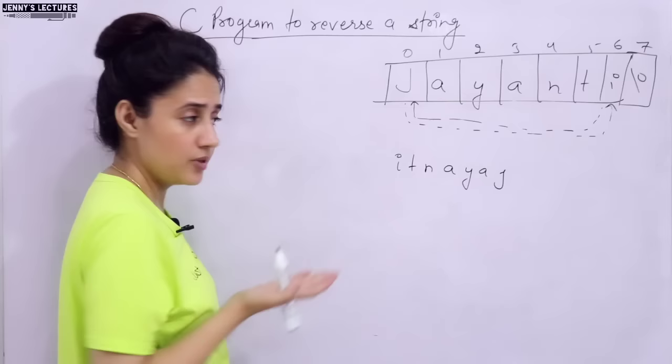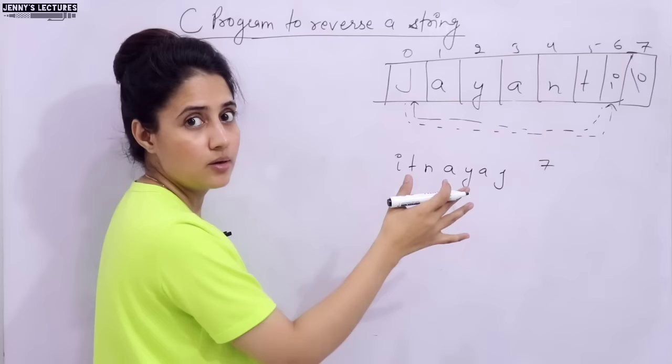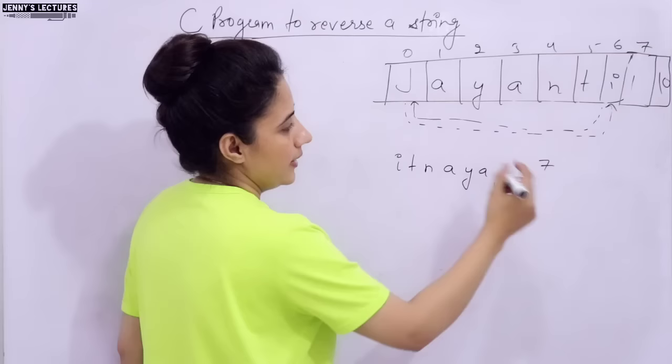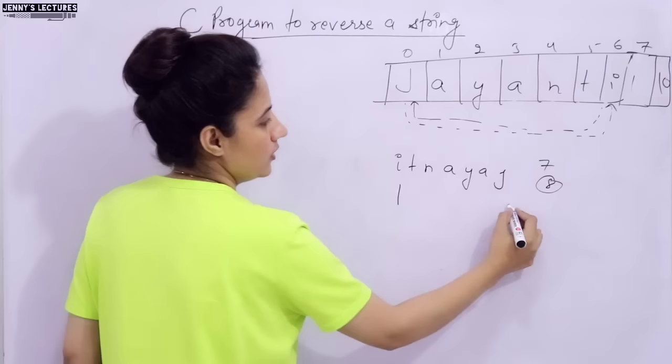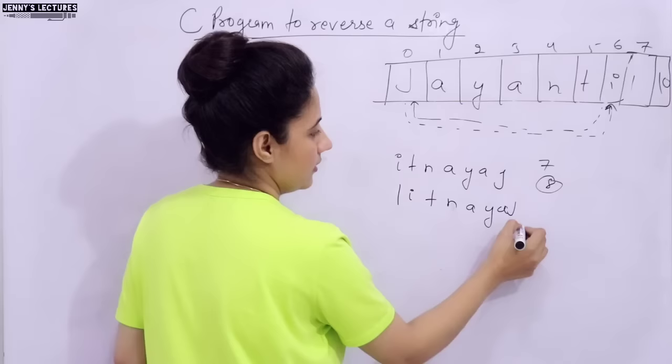There can be two cases: the length of the string can be odd or even. Here the length is seven, which is odd. Suppose the length is eight — even. In that case, suppose the string is 'JAINTHI1': one would be replaced with J, A with I. The output would be: 1, I, T, N, A, Y, A, J. This is what reverse of a string looks like for even length.